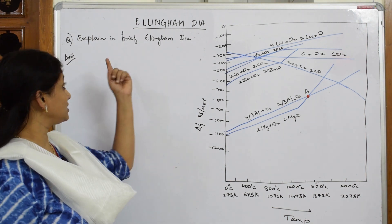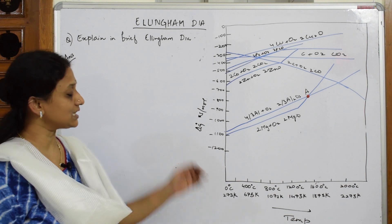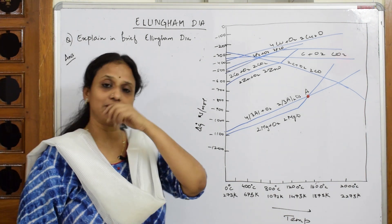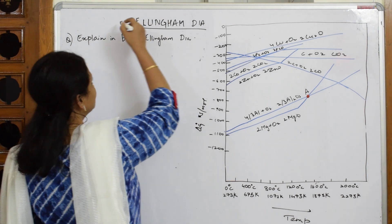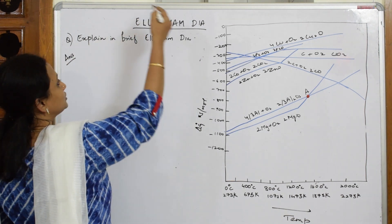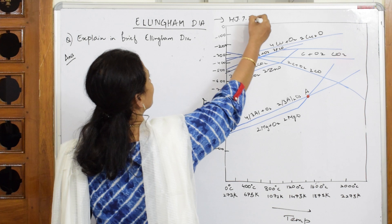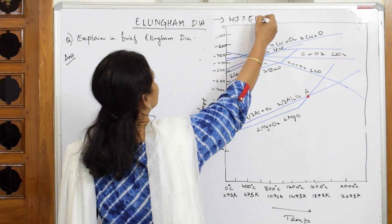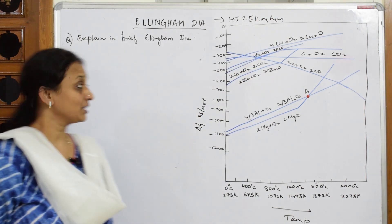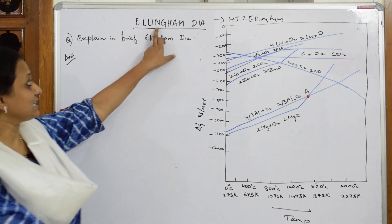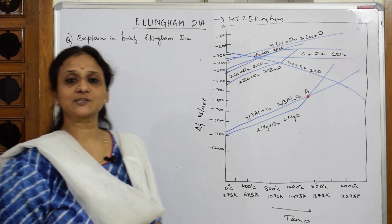The first question: explain in brief the Ellingham diagram. Now this Ellingham diagram was first introduced by H.J.T. Ellingham — so the person who introduced this is H.J.T. Ellingham. Note that the 'N' is silent in Ellingham. This is just for your information.